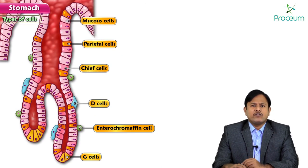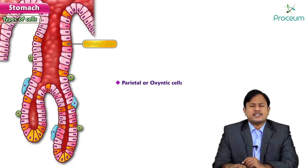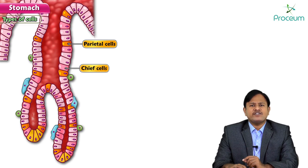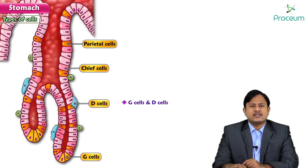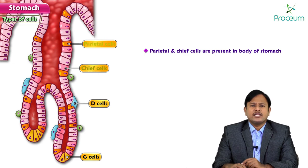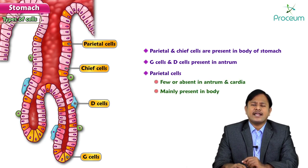The important gastric cells and their locations: parietal cells (oxyntic cells) are located in the body and secrete acid and intrinsic factor. Chief cells, also in the body, mainly secrete pepsin. G cells and D cells are present in the antrum — G cells secrete gastrin, and D cells secrete somatostatin. Importantly, there are very few or no parietal cells in the antrum or cardia; they are mainly present in the body.